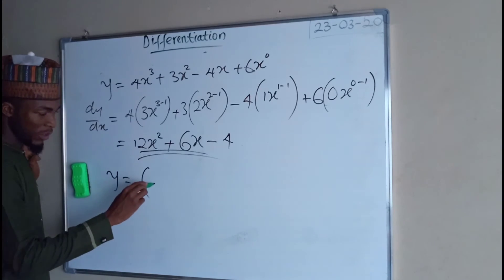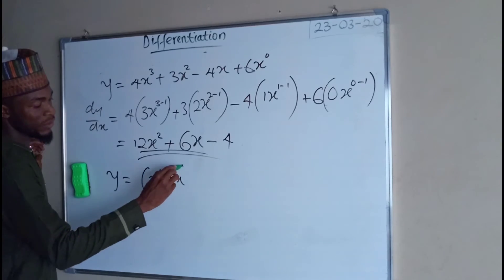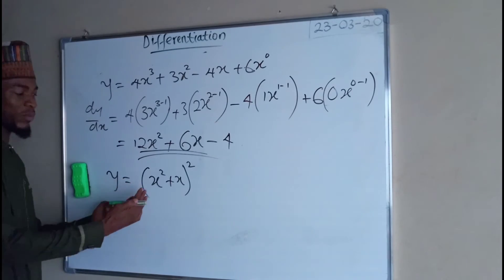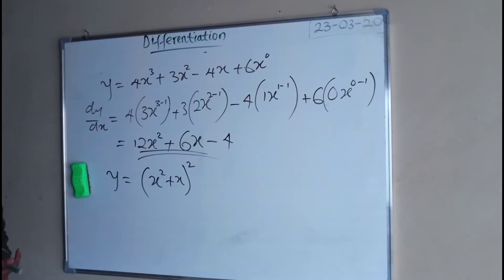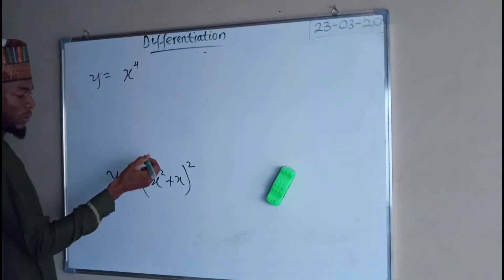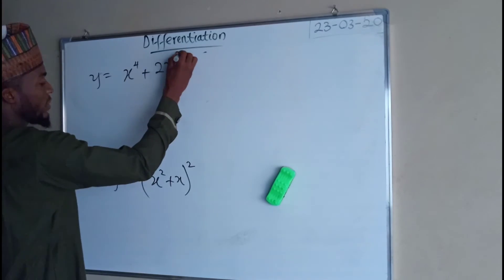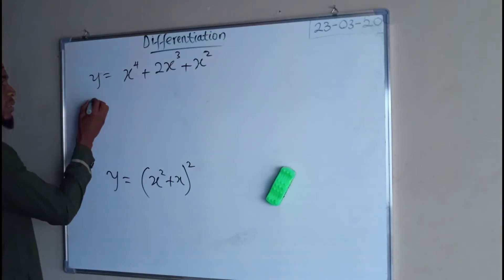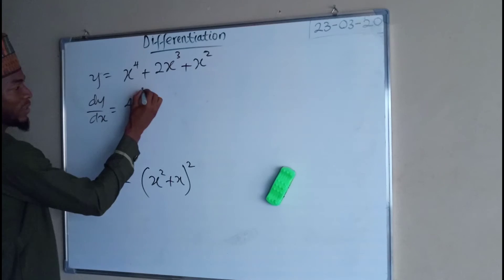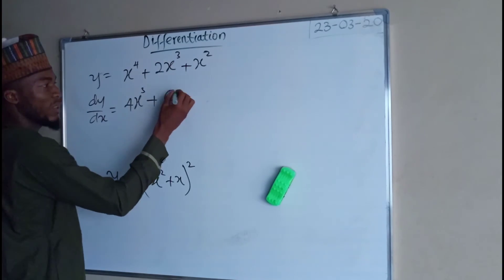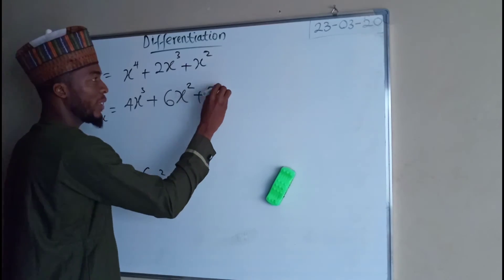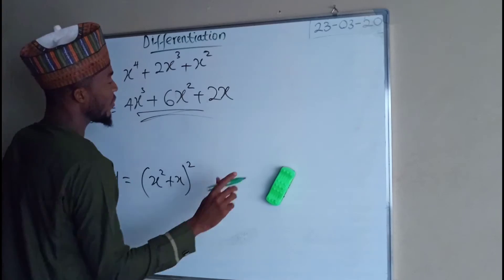If y equals (x squared plus x) to the power 2, there are two ways to find the derivative. You can either expand the bracket first, or apply the chain rule (function of a function). By expansion, y equals x to the power 4 plus 2x cubed plus x squared. Then dy over dx equals 4x cubed plus 6x squared plus 2x. This is the derivative of the function by direct expansion.